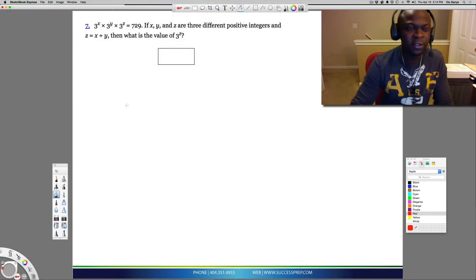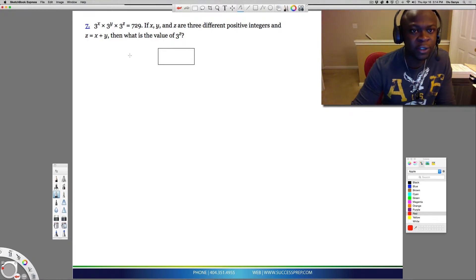Alright, for a question like this on the GRE, we want to look at this question and try to identify what type of question we have. Obviously, it's an exponent question because we have 3 to the x, 3 to the y, 3 to the z. And one of the things about exponents is, well, a couple of things about exponents, you need to know some of the rules of exponents. So let's talk about one of them for right now.